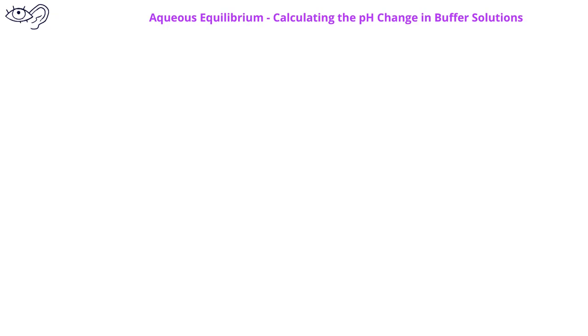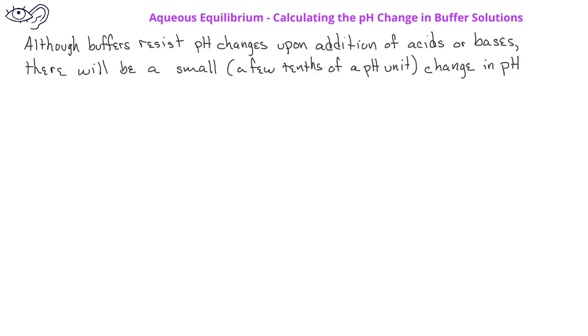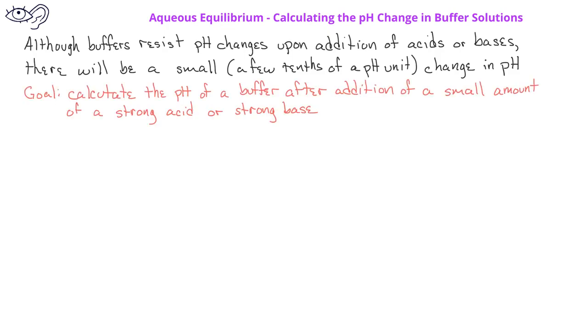In previous videos, we learned about buffers, and we also learned that when a strong acid or strong base is added to a buffer, the buffer resists changes in pH. However, even though the buffer resists changes in pH, it will still experience a small pH change when acids or bases are added. In this video, we will learn how to calculate the pH of a buffer solution after addition of a small amount of a strong acid or a strong base.